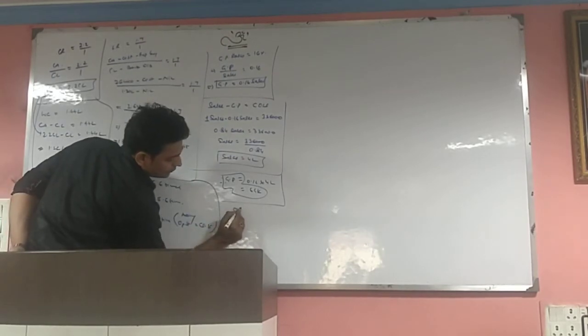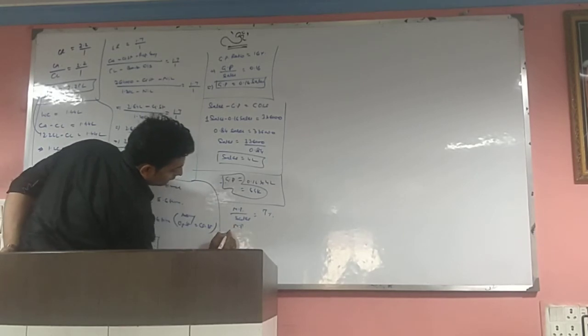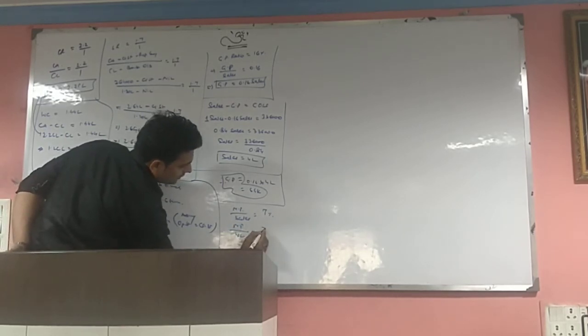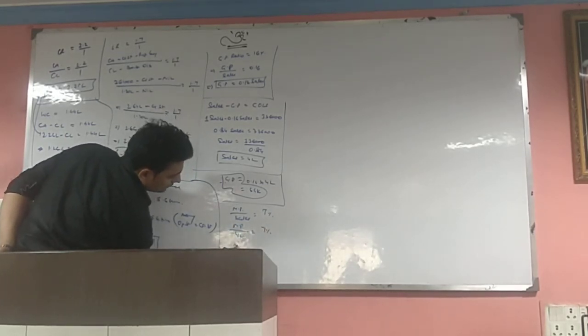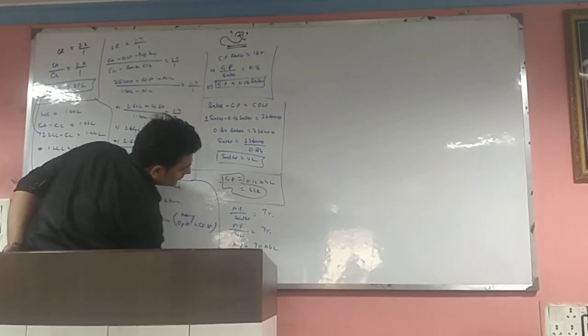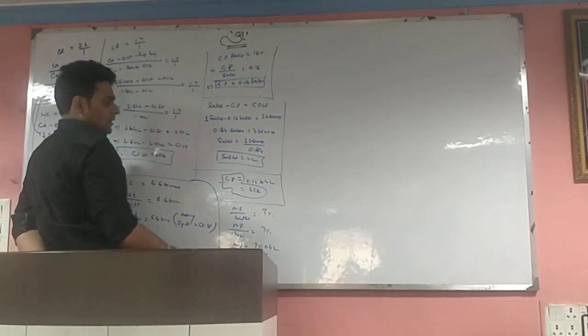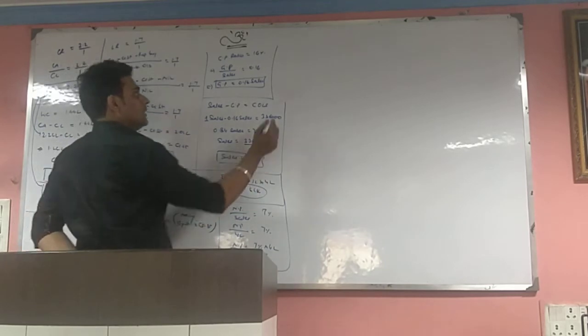Now GP equals 0.16 times sales. Sales we just found is 4,00,000, so GP is 64,000. Next, net profit by sales given is 7%. Net profit we don't know, sale we know.